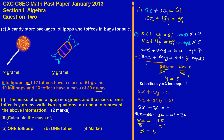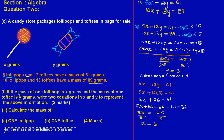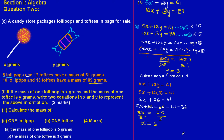Since this is a worded problem, we present our answers in words. For part A: the mass of one lollipop is 5 grams. For part B: the mass of one toffee is 3 grams. Those values come from our solutions for X and Y. Feel free to leave a comment or ask a question at willeducate.com and we'll get back to you as soon as possible.